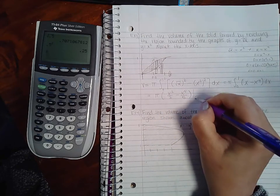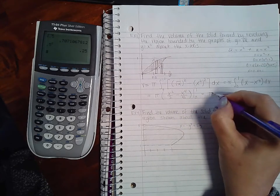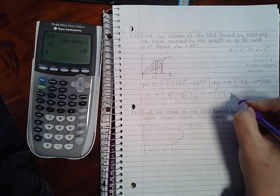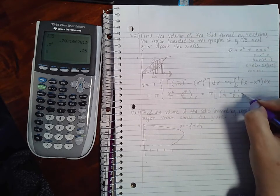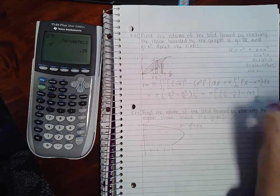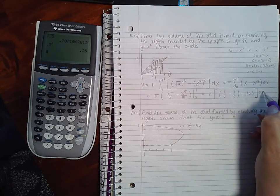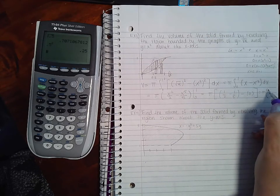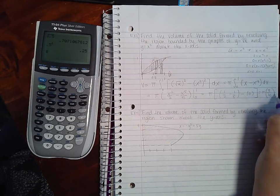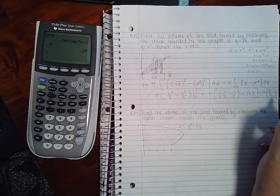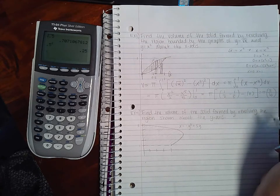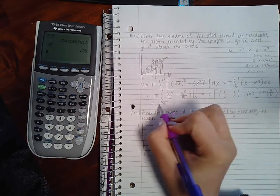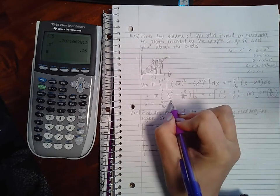And evaluate it from zero to one. So I end up with one over two minus one over five minus zero, and I end up with three over ten, which means we end up with three pi over ten as our volume for this particular problem.